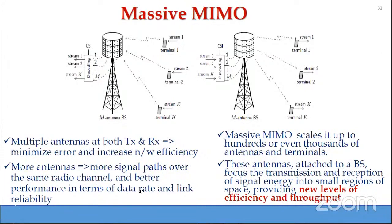Massive MIMO scales up the number of antennas at the transmitter and receiver to hundreds or even thousands of antennas and terminals. These antennas, typically attached to the base station, focus transmission and reception of signal energy into small regions of space, providing new levels of efficiency and throughput.